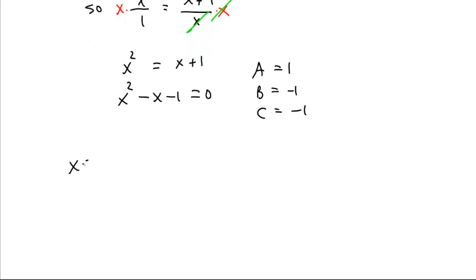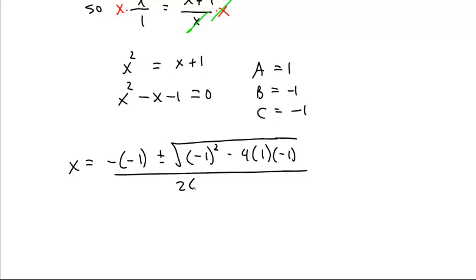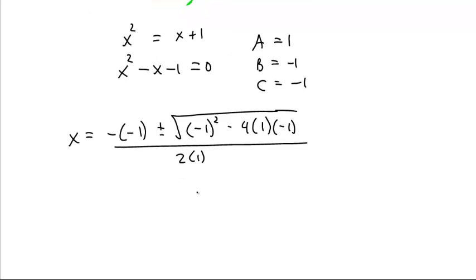So x is negative b, negative negative 1, plus or minus the square root of negative 1 squared minus 4 times a times c, which is negative 1, all over 2 times a, which is 2. And so we get 1 plus or minus the square root of negative 1 times negative 1 is 1. Negative 4 times negative 1 is plus 4, all over 2 times 1 is 2.